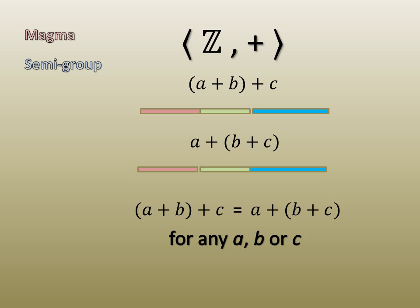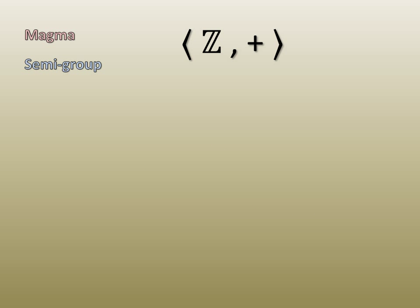Zero doesn't change the identity of any element under addition, so we have a monoid. Because we have the negative numbers, we have invertibility. A plus negative A always gives us zero, so we have a group.